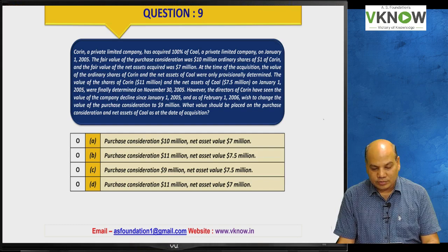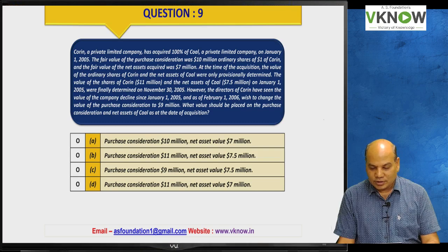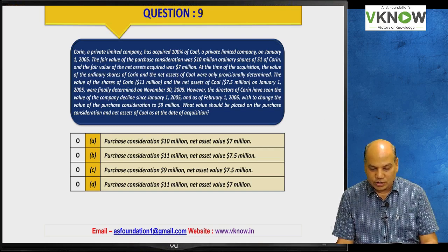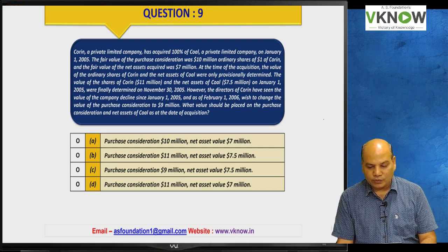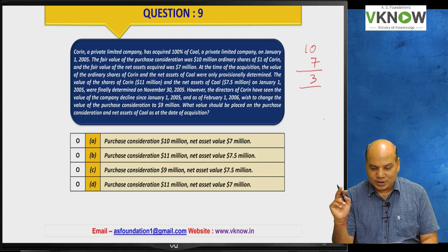Question number nine: Corrin Private Limited acquired 100 percent of Coal Private Limited on 1st January 2005. The fair value of purchase consideration was ordinary shares of Corrin with a fair value of $10 million, and the fair value of net assets acquired was $7 million. The values were provisionally determined. Provisional goodwill is $10 million minus $7 million equals $3 million. There is no NCI.